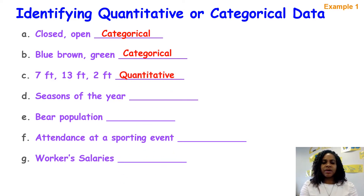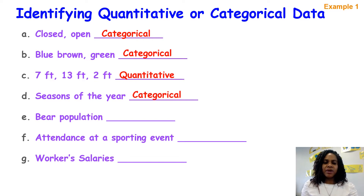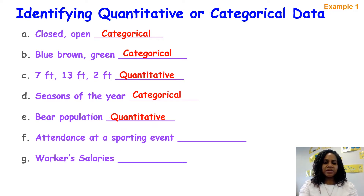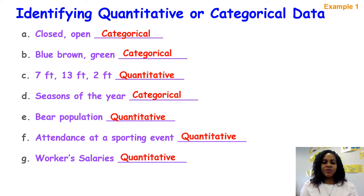Seven feet, 13 feet, and two feet are quantitative because we have numbers. Seasons of the year would be categorical. Bear population is quantitative because we're talking about a number of bears. Attendance at a sporting event is again quantitative because we're talking about how many people are there.